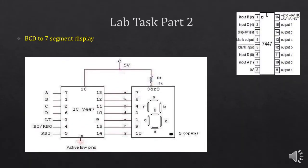In part 2 of this lab, you are going to use a 7-segment decoder IC. The IC that you are going to use is 7447. It is a 16-pin IC which is used for displaying BCD numbers on a 7-segment display. Pin numbers 7, 1, 2, and 6 are the inputs of this IC. While pin numbers 13, 12, 11, 10, 9, 15, and 14 are the outputs.